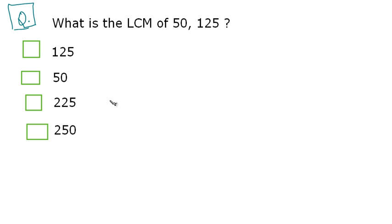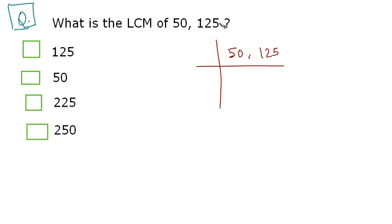Time for a question here. What is the LCM of 50 and 125? We solve this by dividing these two numbers by prime numbers. We write 50 and 125 like this. The smallest prime number that can divide 50 is 2: 2 × 25 = 50, and since 2 cannot divide 125, we just carry 125 forward.